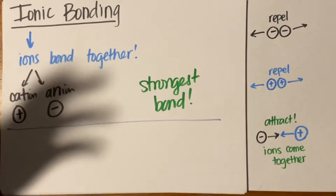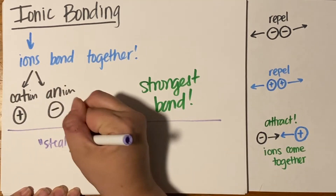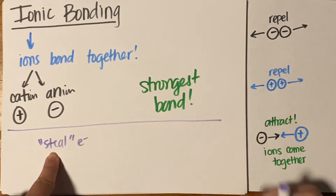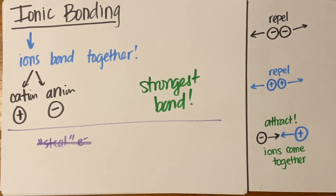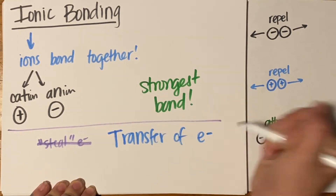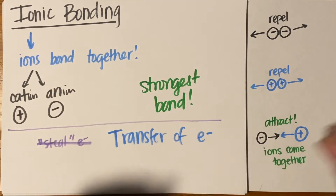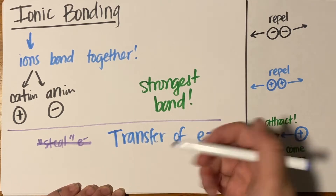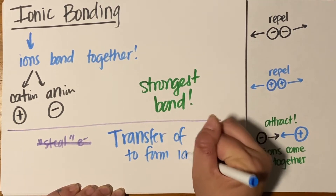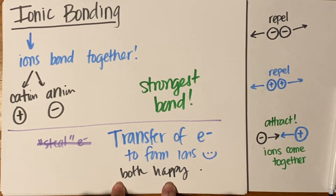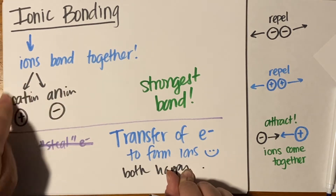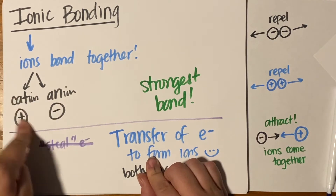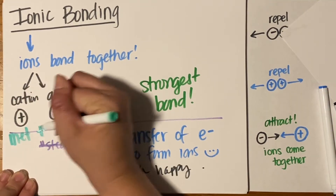One thing I want to clarify: in the past you may have heard that ionic bonding is about stealing electrons — that someone steals electrons from someone else. I really don't want you to think about it that way, because that implies one party is getting screwed. Ionic bonding is a transfer of electrons — a full transfer of electrons from one atom to another — to form ions. Both the cation and the anion are happy about this arrangement. No one is stealing from anybody. And ionic bonding means you're going to have metals bonding to non-metals.